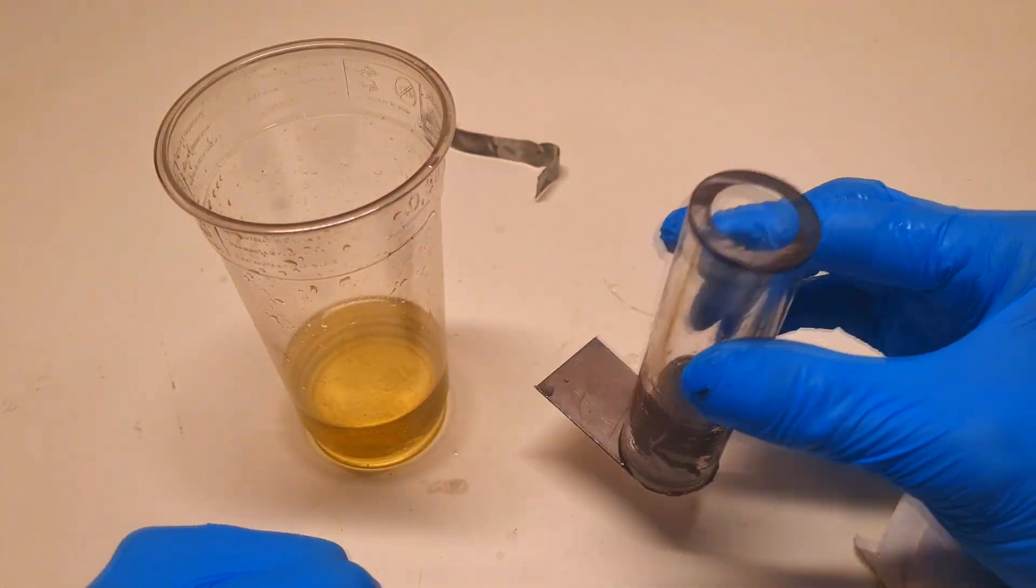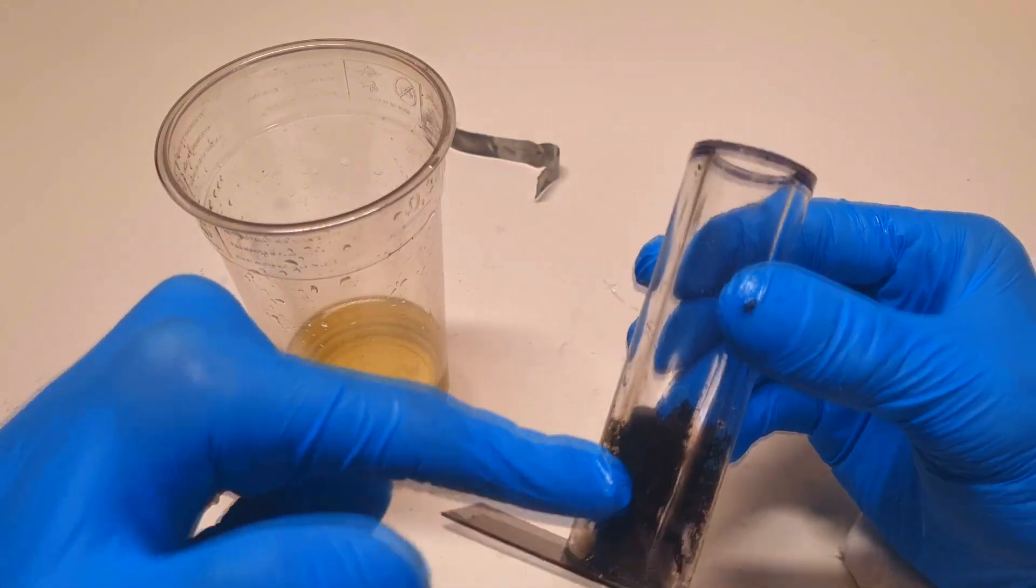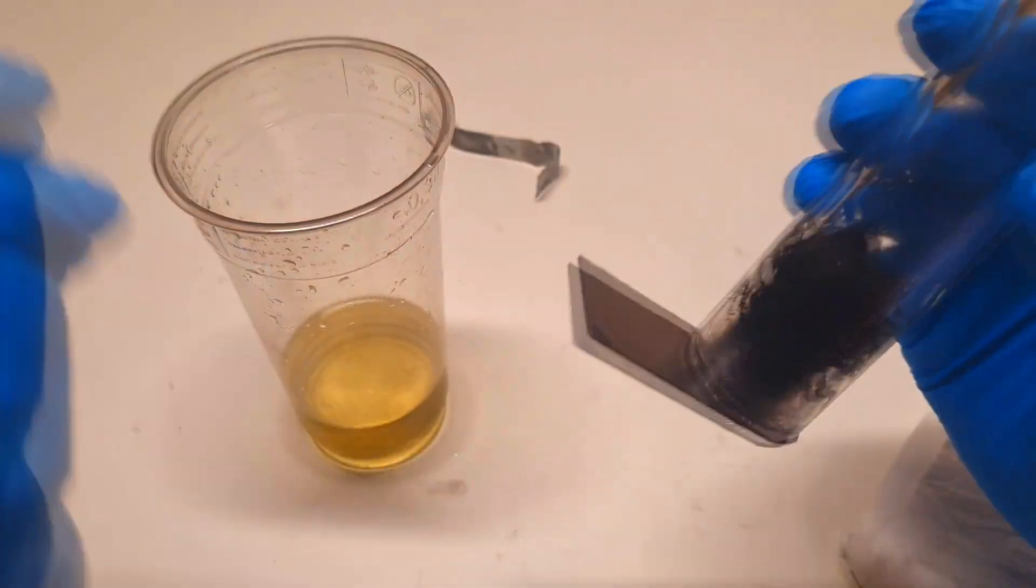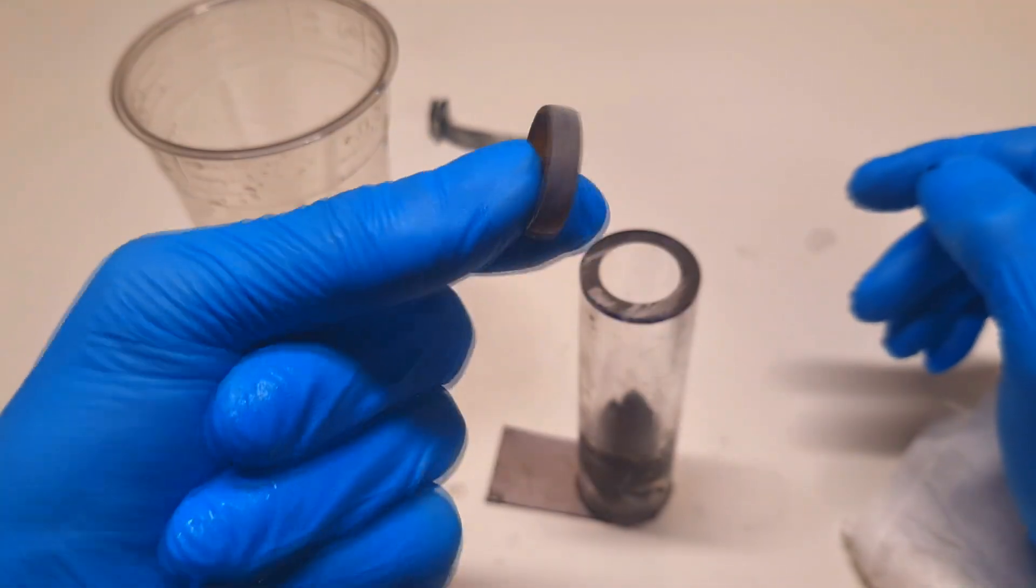And now I also need something that will push this activated carbon felt to this graphite current collector, and for this I have this one.